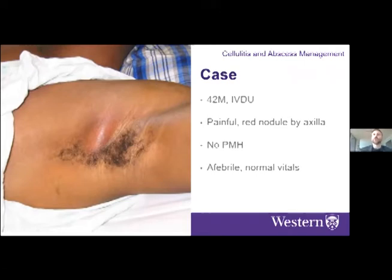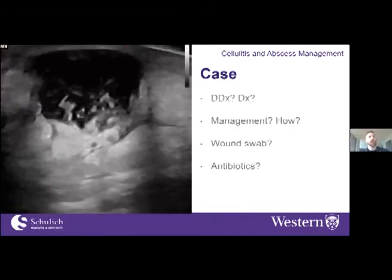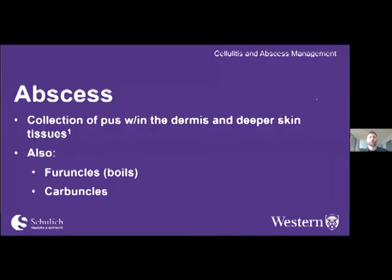Case 2: a 42-year-old man who is an IV drug user presents with a painful red nodule in the axilla. No past medical history, afebrile, normal vitals. You place an ultrasound on it. What is your diagnosis and differential, how would you manage this, would you swab it, and would you treat it with antibiotics?